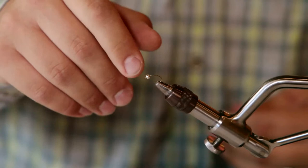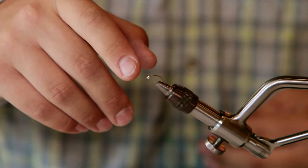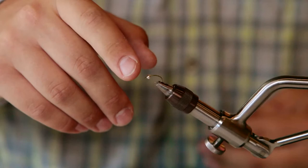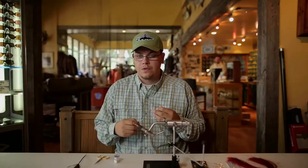So I'm going to be tying this today on a TMC 2457, this is a size 12 to help you guys see it, and with a small silver bead as the weight and the head of the fly.